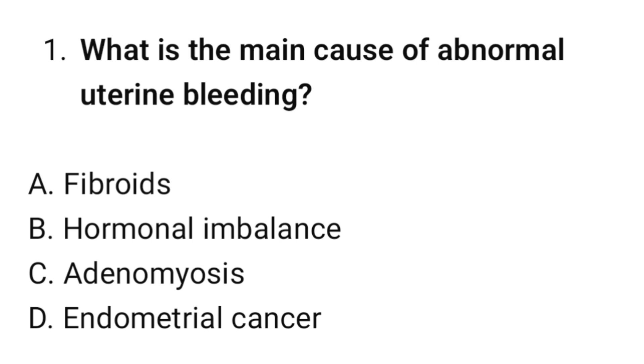Question number one: What is the main cause of abnormal uterine bleeding? The correct option is B. Hormonal imbalance.